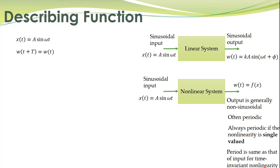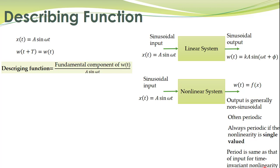How do we define the describing function? Here is the formal definition: the describing function is the ratio of the fundamental component of the output signal w(t) and the input signal. We note that w(t) is a periodic signal, and we can find the fundamental component of this periodic signal. The describing function is the ratio of the fundamental component of w(t) and the input signal A sin(ωt).